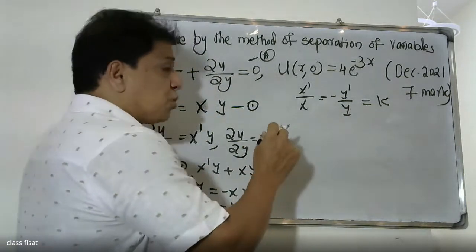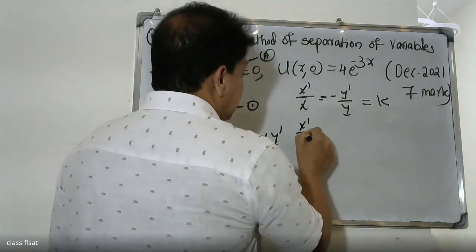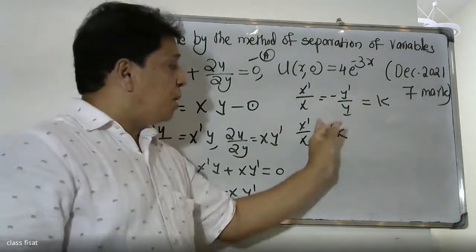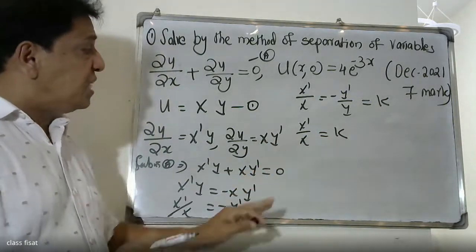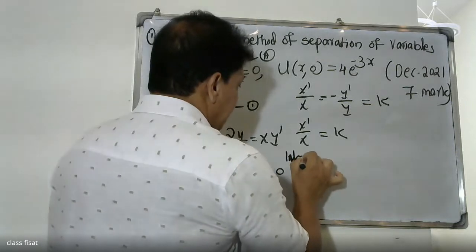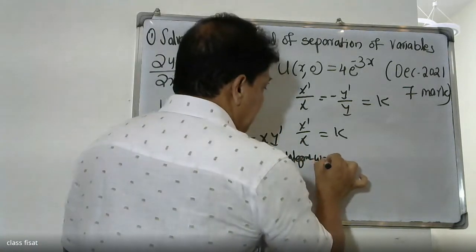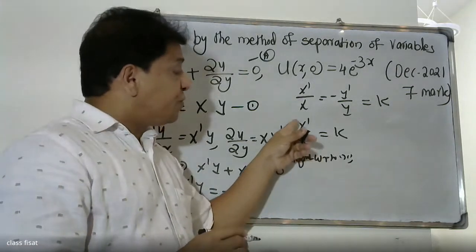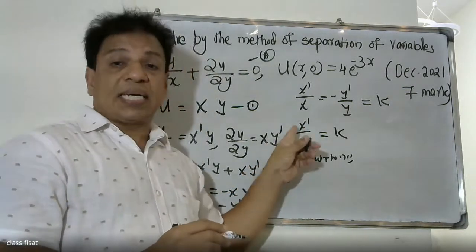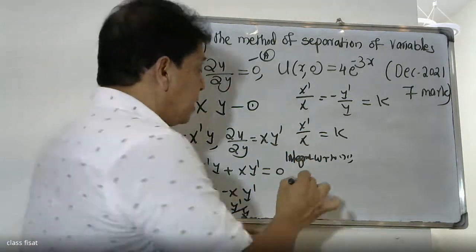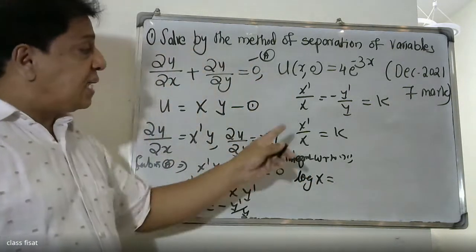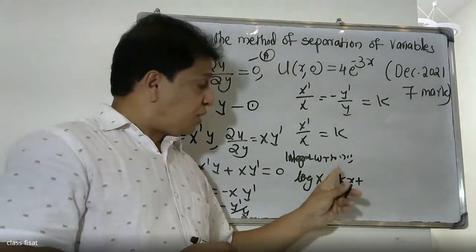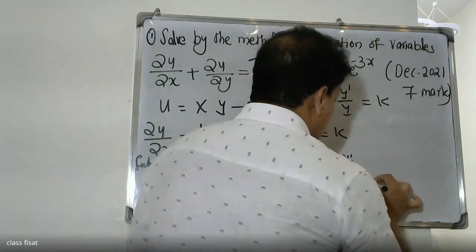So we have two equations: X'/X = k, and −Y'/Y = k. Integrating X'/X = k with respect to x — since the derivative of the numerator is in the numerator — we get log X = kx, and adding the constant of integration log c1.